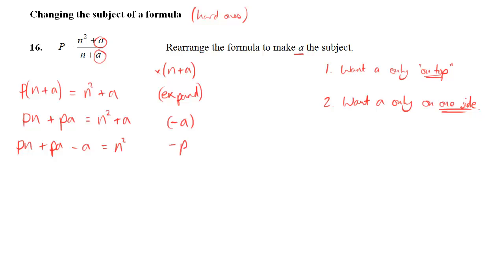But we want to get rid of this PN from the left-hand side, because that doesn't have an A in it. We don't want it there. So I'm going to subtract that. So I'm left with PA minus A on the left, and N squared minus PN on the right.